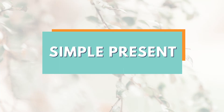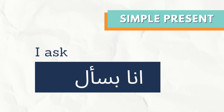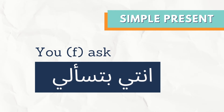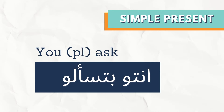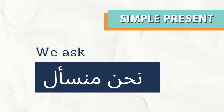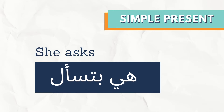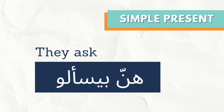This is how we conjugate the verb in the present tense. Ana bis-al. Enta betis-al. Enti betis-al-ee. Entu betis-al-oo. Nahna minis-al. Huwe biis-al. Hiye betis-al. Hennen biis-al-oo.